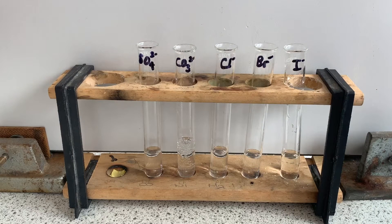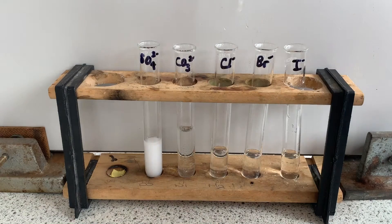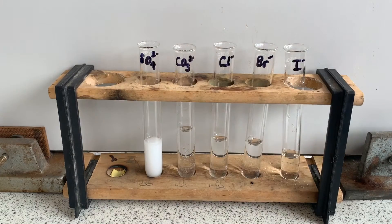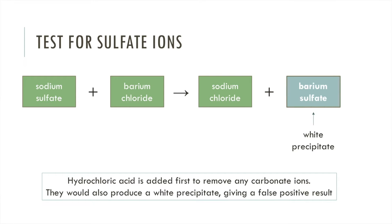Now I'm testing for the sulfate ion. Keeping the solutions as they are with the hydrochloric acid added, I'm additionally adding barium chloride. You can see when added to the sodium sulfate a white precipitate is formed, whereas no precipitate is formed with any of the other solutions. When barium chloride reacts with sodium sulfate, barium sulfate is formed and that's the white precipitate you can see. We added hydrochloric acid beforehand as that removes the carbonate ions. If we hadn't done that we would have gotten a false positive because the reaction with sodium carbonate and barium chloride also produces a white precipitate. So we do need to add hydrochloric acid first to get rid of the carbonate ions.